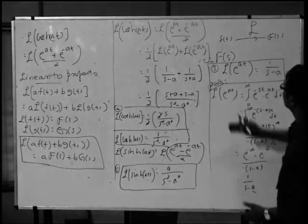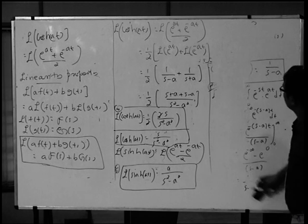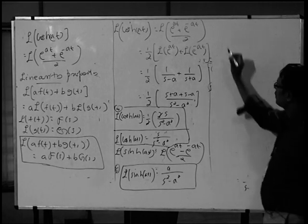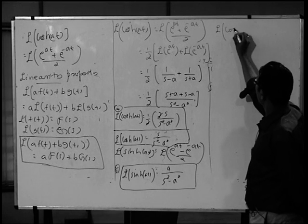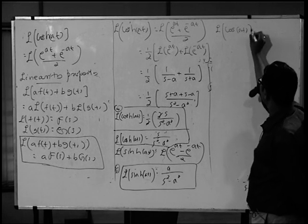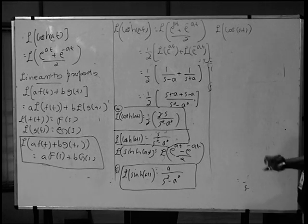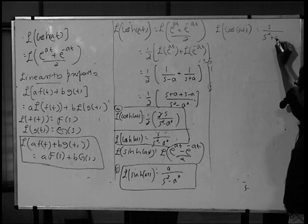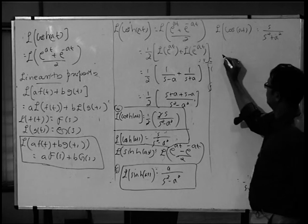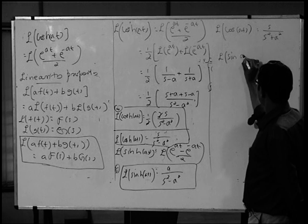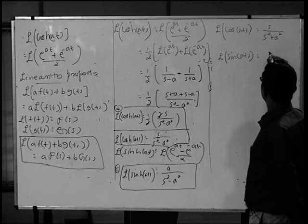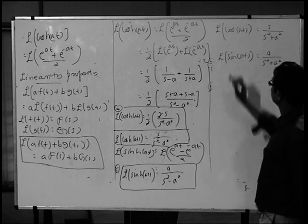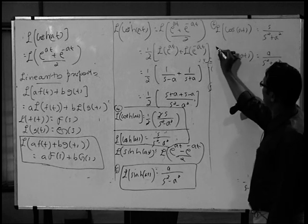Similarly, applying the same property for trigonometric functions: Laplace transform of cos(at) equals s/(s² plus a²), and Laplace transform of sin(at) equals a/(s² plus a²). These are formula number 6 and formula number 7.